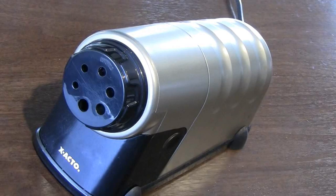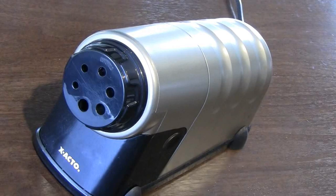To check for shavings in the ring gear, unplug the sharpener, remove the receptacle, and turn the sharpener over for inspection.